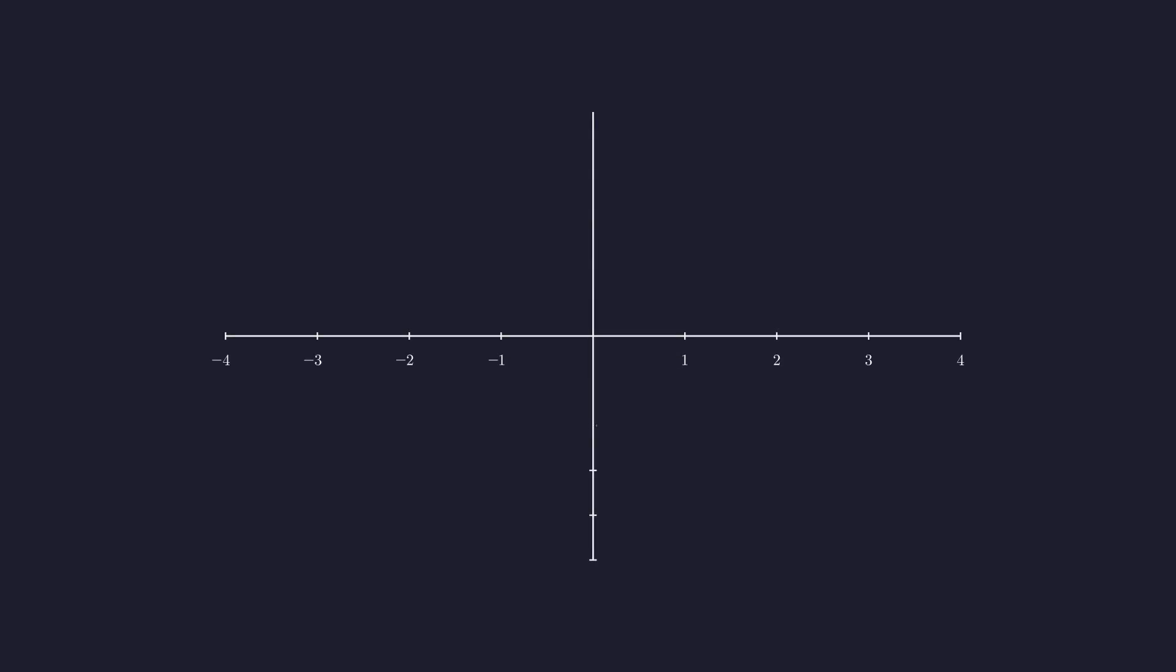Let's visualize the function y equals one divided by x. This will help us see what happens as x gets closer and closer to zero. Notice the shape of this graph. It has two separate curved branches that get closer and closer to the x equals zero line, but never actually touch it. Mathematicians call this a hyperbola, and that invisible boundary the graph approaches is called an asymptote.